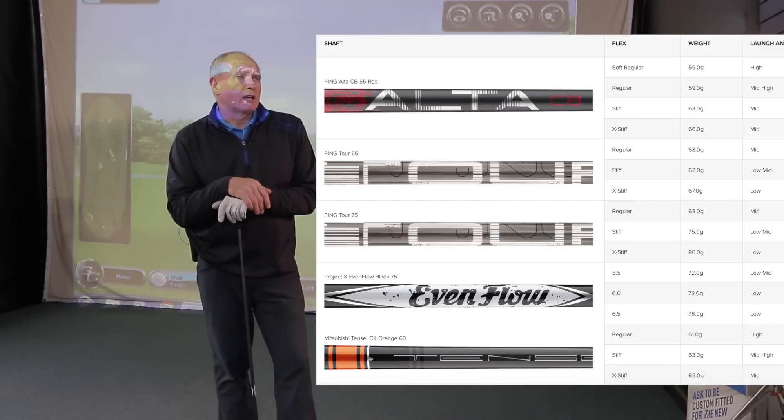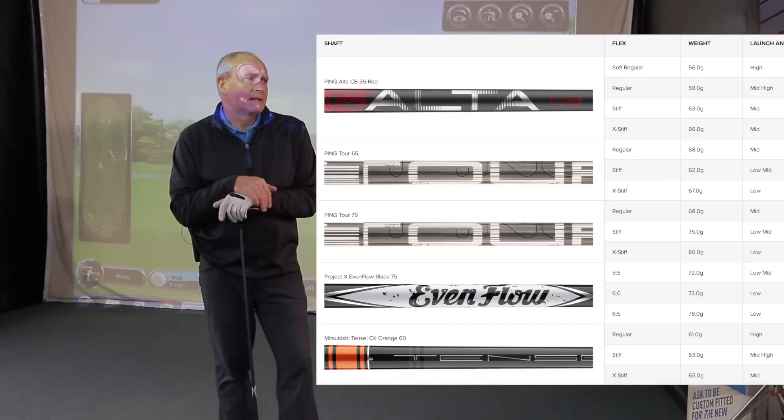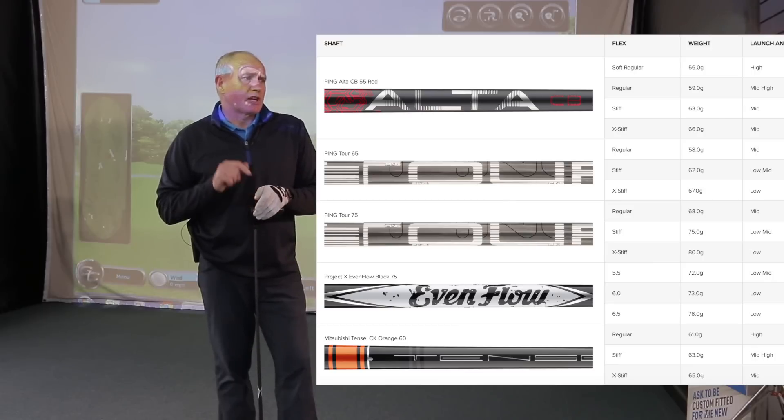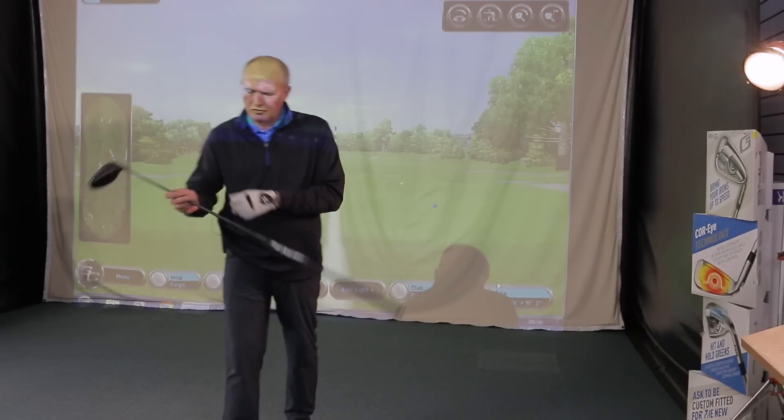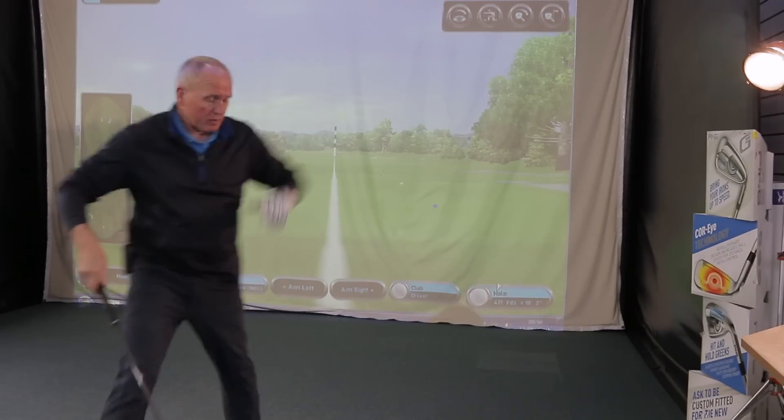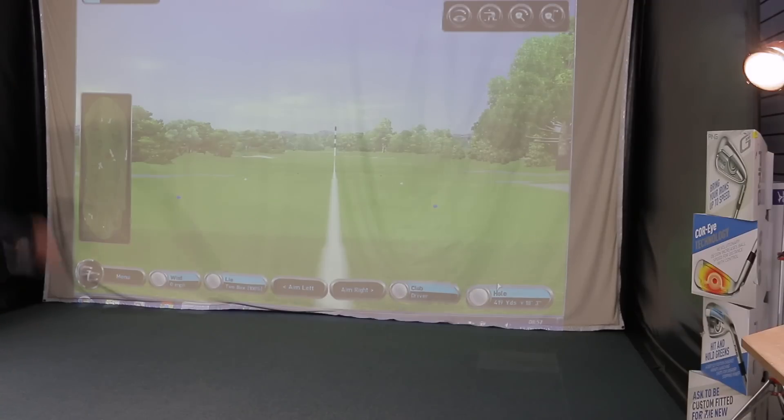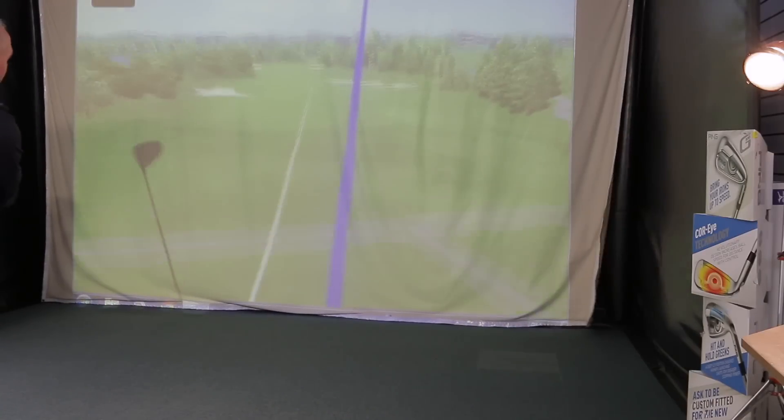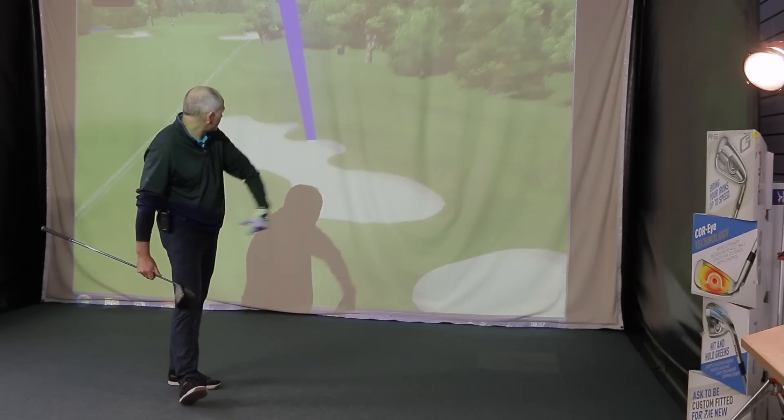And the aftermarket shafts, which are no upcharge here in the UK, we've got the Tensei CK Orange and an EvenFlow Black. This is apparently a low trajectory with a smooth feel. Well, it depends who's hitting it, really, to give you the smooth feel, isn't it? Anyway, let's have a hit with it, shall we? Got GC2 running, I've got some Mizuno balls on the deck. Let's see if we can launch one.